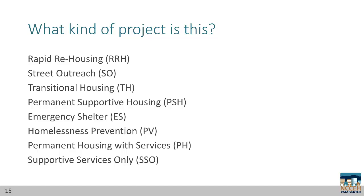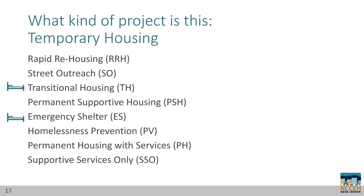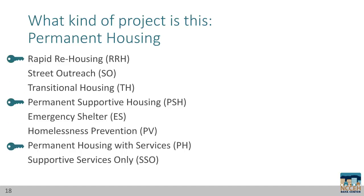Let's round up the categories of projects. Services projects that do not offer residential or lodging services are street outreach, homeless prevention, and supportive services only projects. Our two main project types for temporary housing are transitional housing and emergency shelter. Lastly, permanent housing projects include Rapid Rehousing, Permanent Supportive Housing which requires a disability, and Permanent Housing with Services which does not require clients to have a disability.